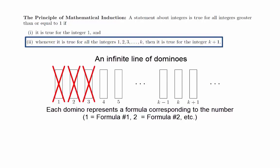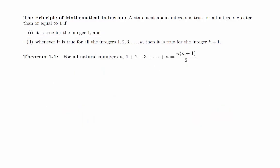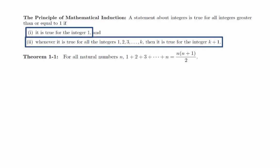For example, if we can knock over the first three dominoes, then we can also knock over the fourth. If we can knock over the first four dominoes, then we can knock over the fifth, and this works for any integer k. Intuitively, if both these conditions are met, we should be able to knock over the entire line. We will use this idea to prove the formula for the sum of the first n positive integers. To prove a statement using induction, we must prove that the statement satisfies the two conditions.